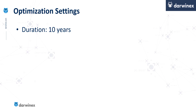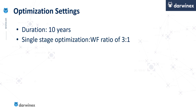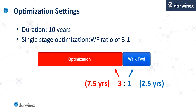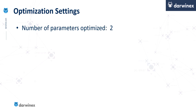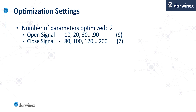A high-level overview of the optimization settings: I used a duration of 10 years. It was a single-stage optimization — not a multi-stage walk forward analysis — keeping things very simple. That used an optimization to walk forward ratio of three to one: 7.5 years for the optimization and 2.5 years for the walk forward validation. In line with my advice from previous tutorials, I kept the optimization to just two variables — one for the open signal and one for the close signal — amounting to nine values for the open and seven for the close, meaning 63 parameter combinations in total.